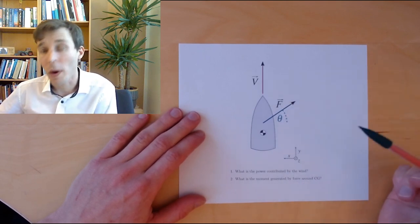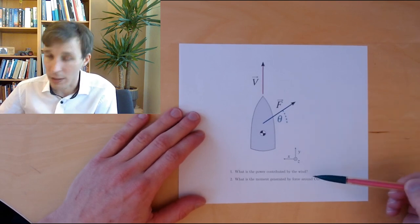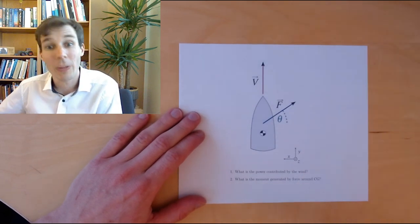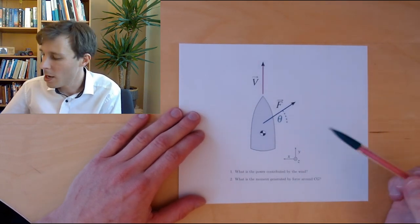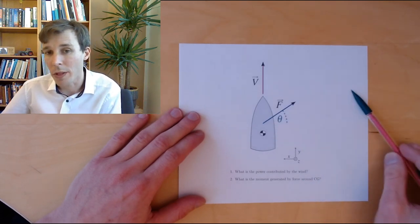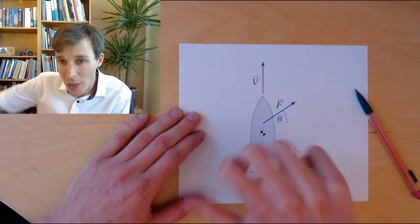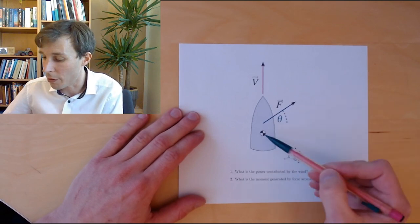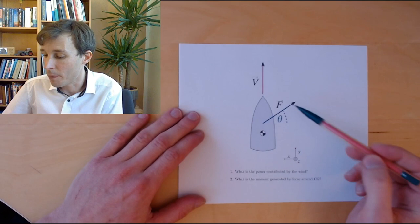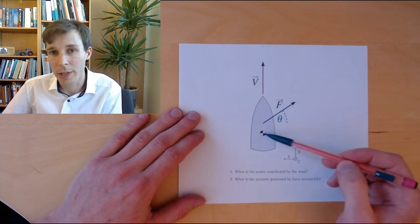We try to answer two questions. One is what is the power that is contributed by the wind? The wind is helping the boat along. At which power is the wind helping? And the second is what is the moment exerted by the force due to the wind around the center of gravity. How much twisting force is this force exerting around the center of gravity?